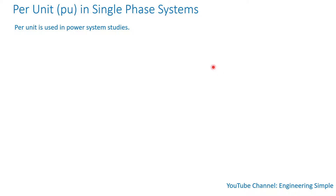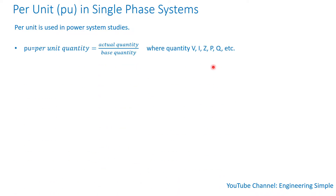Per unit is used in power system studies. Instead of using actual units like MVA, KVA, voltage, amps, or ohms, a base is used across all quantities and everything is converted on that base — voltage, MVA, impedance, and so on. The per unit quantity is basically the actual quantity divided by the base quantity. The actual quantities can be measurements, test information, or design information — voltage, current, impedance, real power in watts, kilowatts, or megawatts.